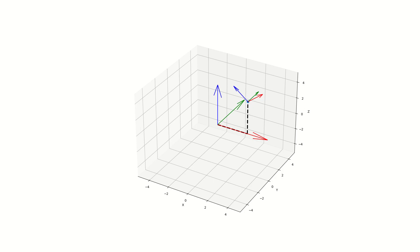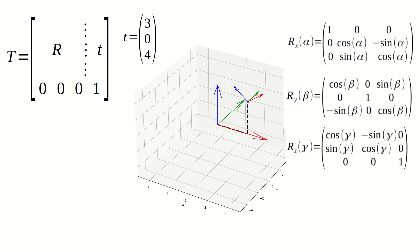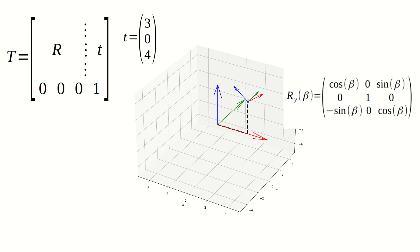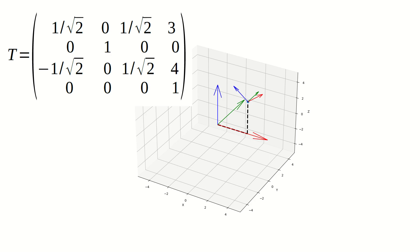This procedure is described numerically by constructing the transform. The translation vector is equal to the definition of point P, so that's already done. To rotate a coordinate system around its axes, three rotation matrices are available. In our example, we only need to use the rotation matrix for y, since we rotate around the y-axis. We plug in the 45 degrees into the matrix and simplify into numeric values. When we put the rotation matrix and the translation vector together, we get the complete transform.